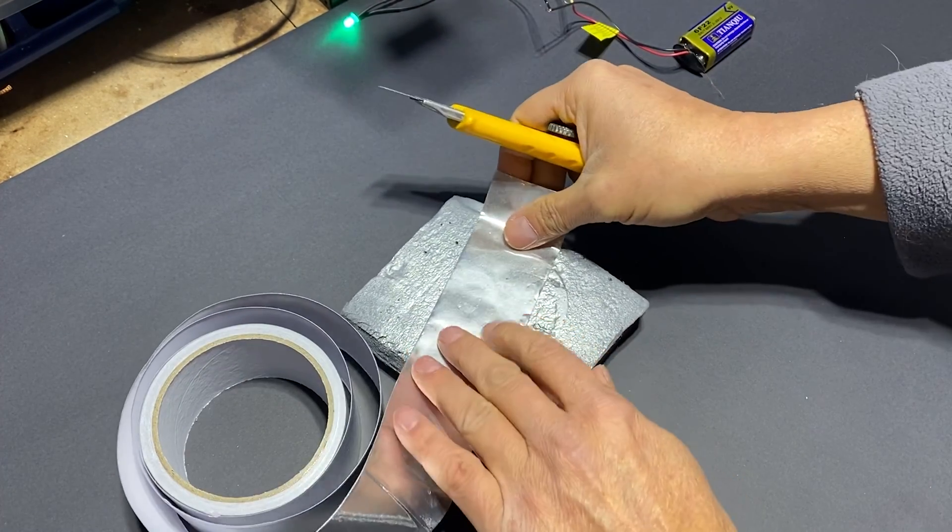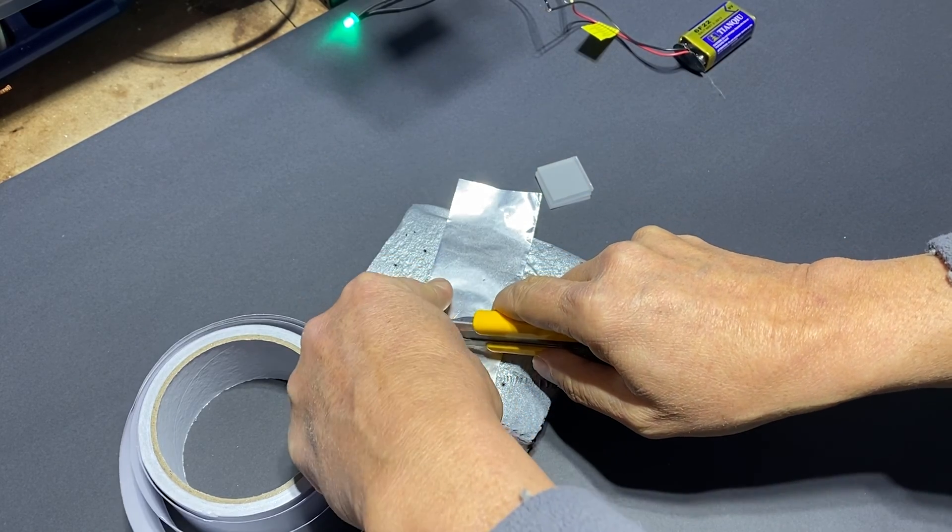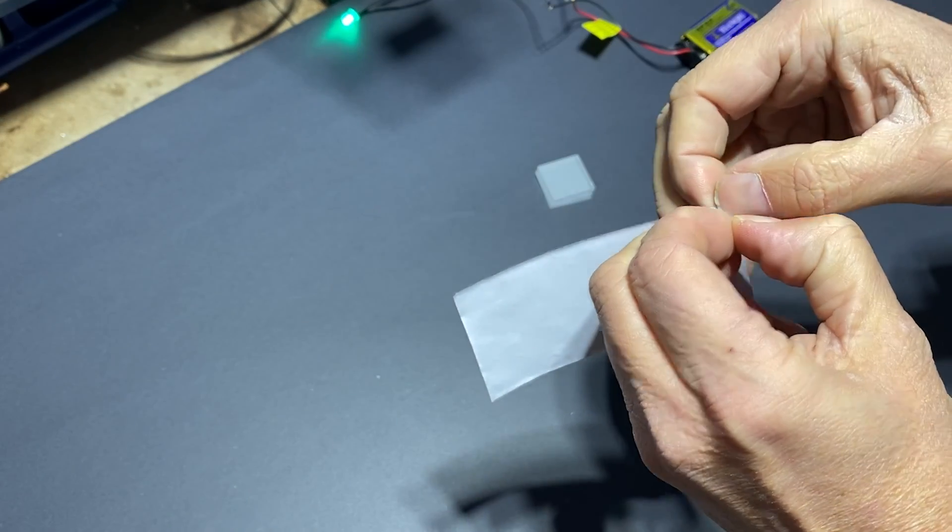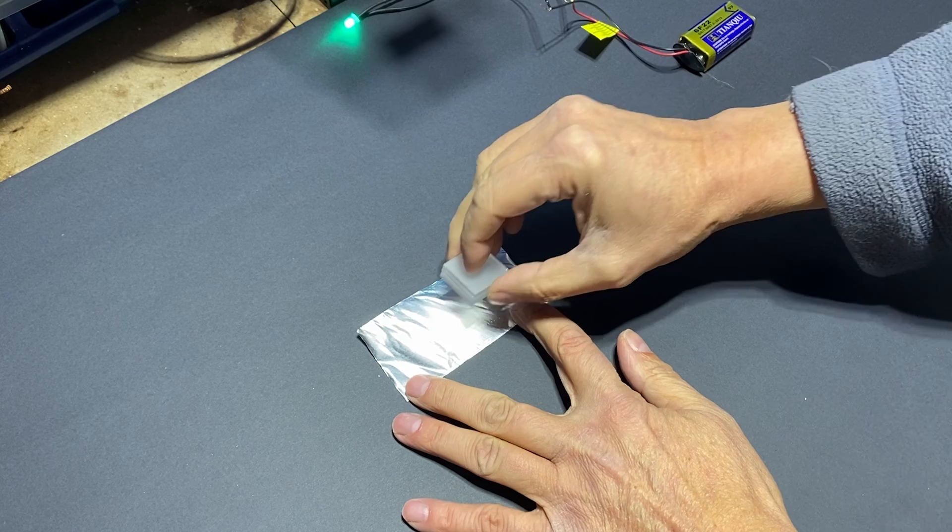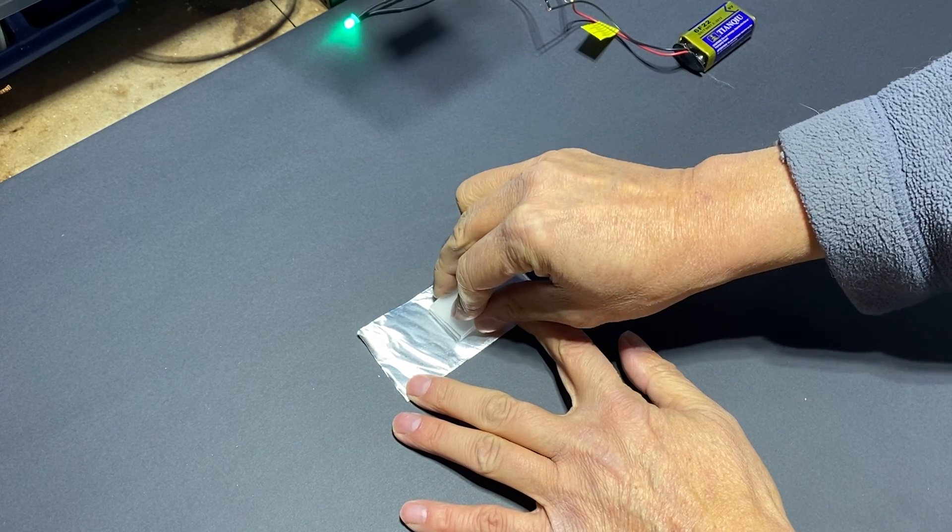I cut a length that is large enough to cover the LED and the tiles. I remove the liner and place the tiles in the center on the adhesive side of the aluminum tape.